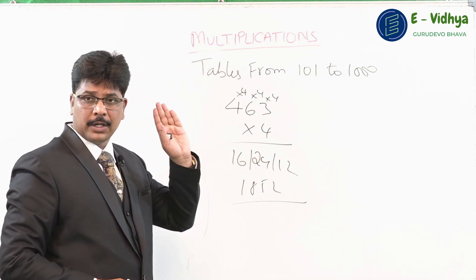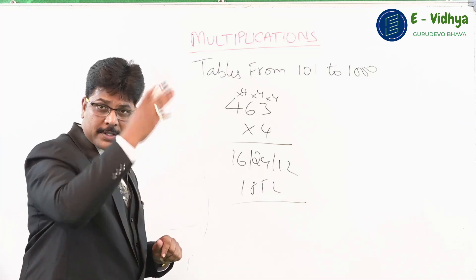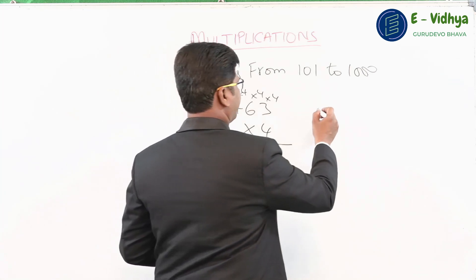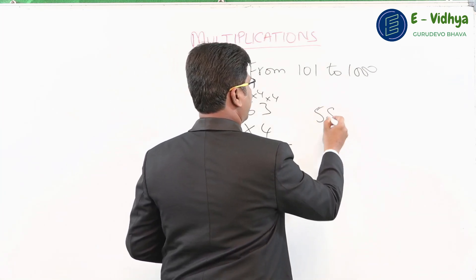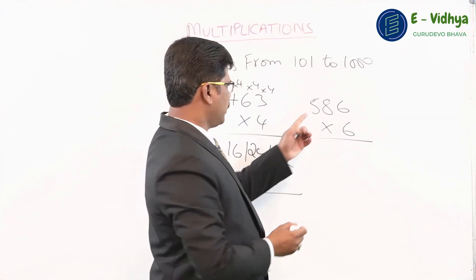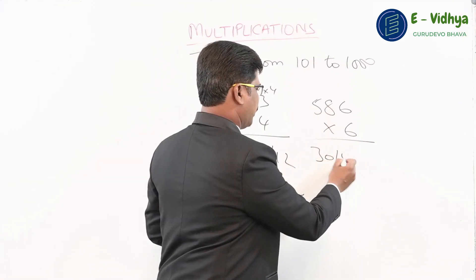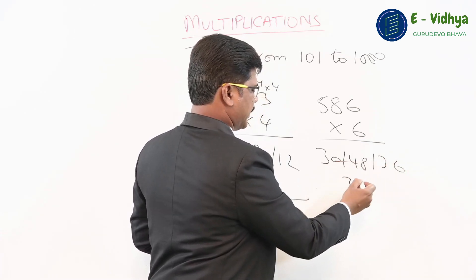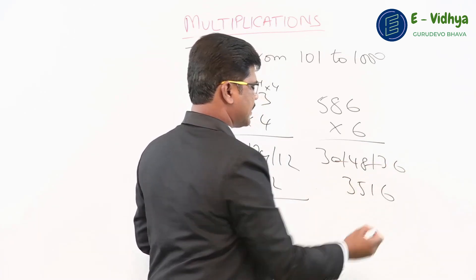This is the same balancing concept I already taught you in addition. For example, 586 multiplied by 6: five sixes are 30, eight sixes are 48, six sixes are 36. So we get 34, next press carry to get 35, and the end number is 16. The answer is 3516.